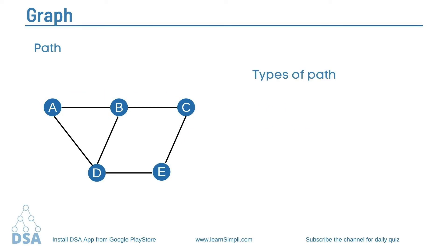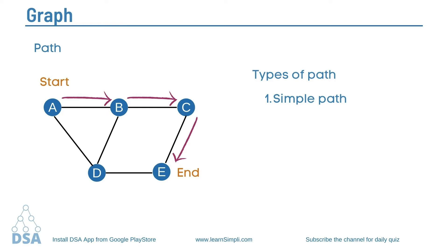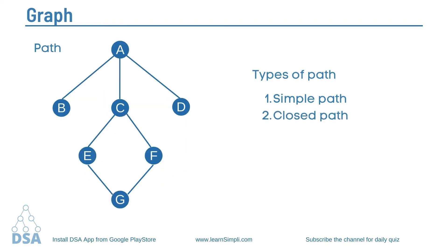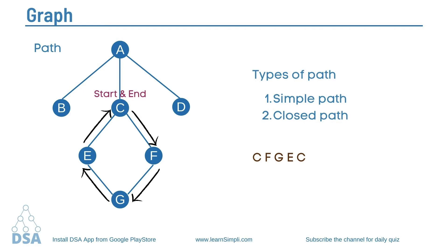We have different types of paths. The first one is a simple path, in which all vertices are distinct — no vertices are repeating. Next is a closed path. A path is said to be closed if the first and last node of that path are the same. For example, the path C, F, G, E, C — the first and last node are the same. Vertices within a closed path can be repeated, for example the path A, C, F, G, E, C, A.